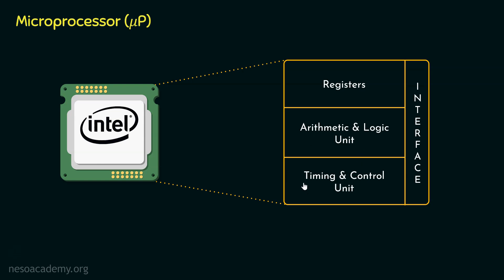The timing and control unit is a very interesting section. When an application is being run, the instructions within it are to be executed in a particular sequence. Which instruction is to be executed after which is taken care of by the timing unit, and the required components needed to execute those instructions are activated using the control unit. Finally, the interface section helps the microprocessor interface with all the different components of the computer system.